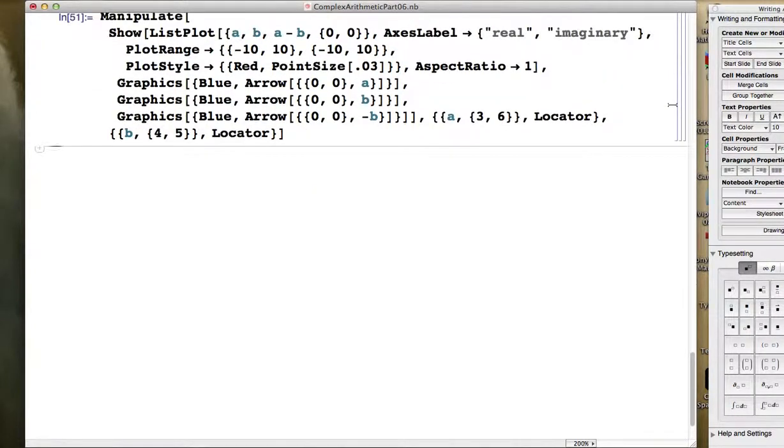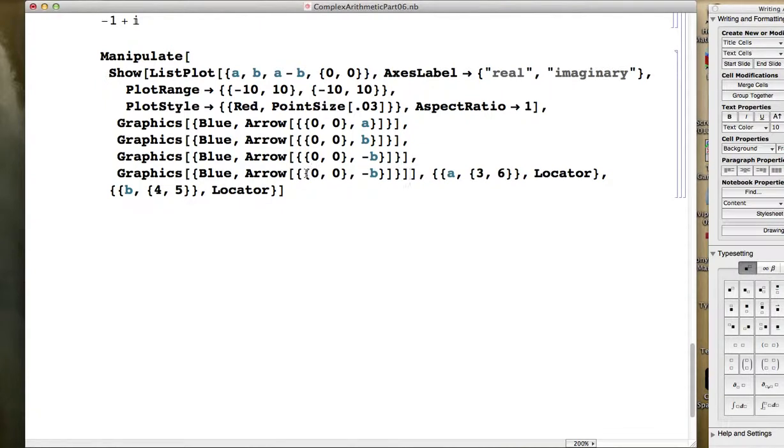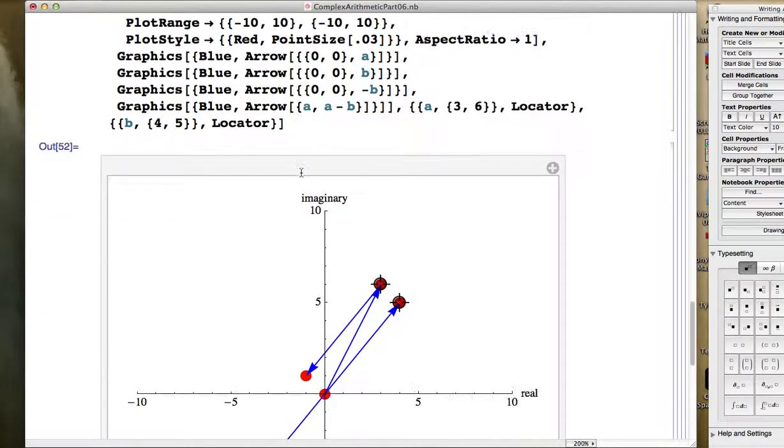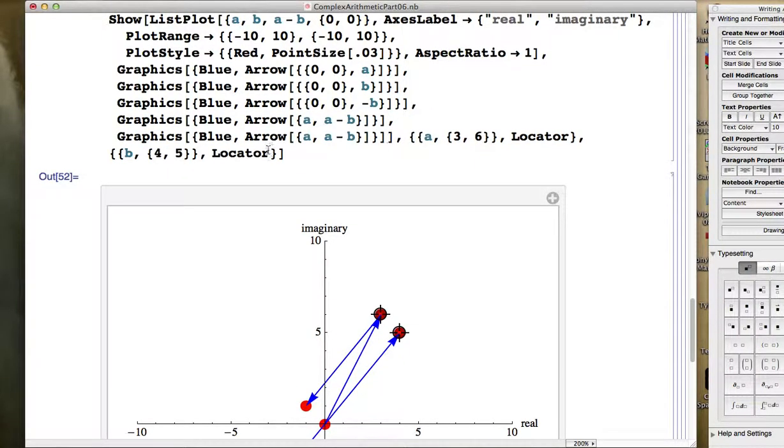Accidentally clicked on the thing there. Let's also add an arrow that starts at a and ends at a minus b. Two more arrows.